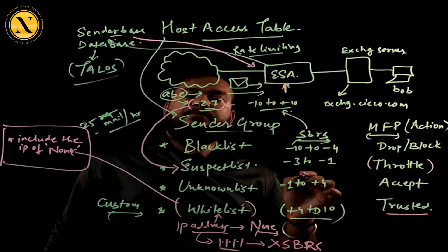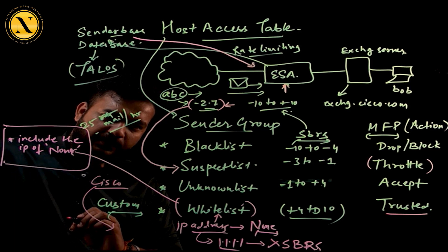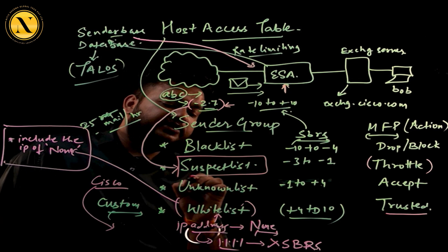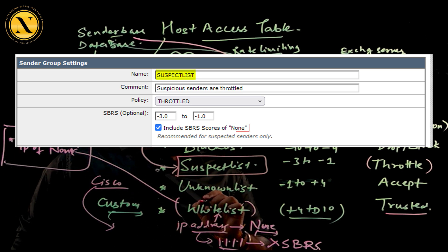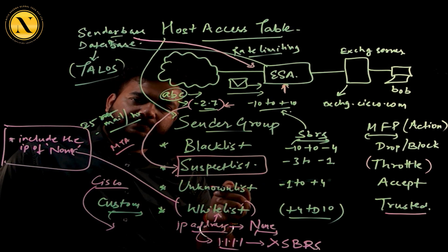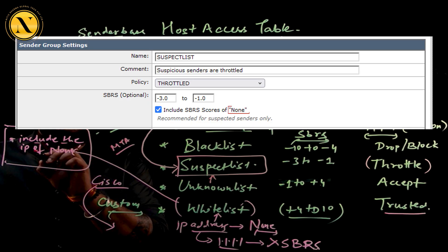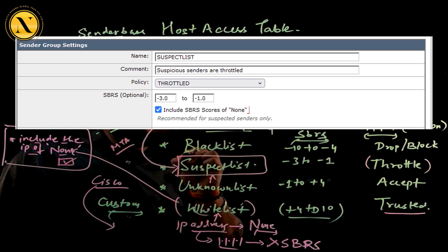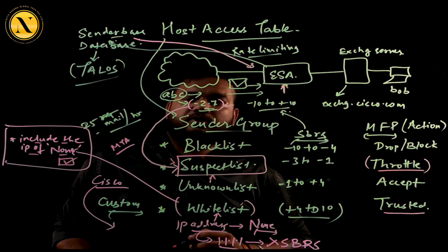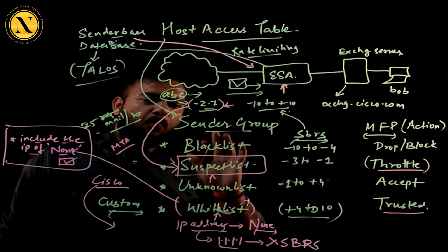However, as per Cisco best practices, they recommend that brand new IP addresses trying to send email globally should always be placed in the suspect list, because these are suspicious IP addresses of random mail transfer agents. You can't fully trust them, but you can't fully drop them either. So include those none IP addresses in the suspect list sender group, and the throttle mail flow policy will be imposed on them.